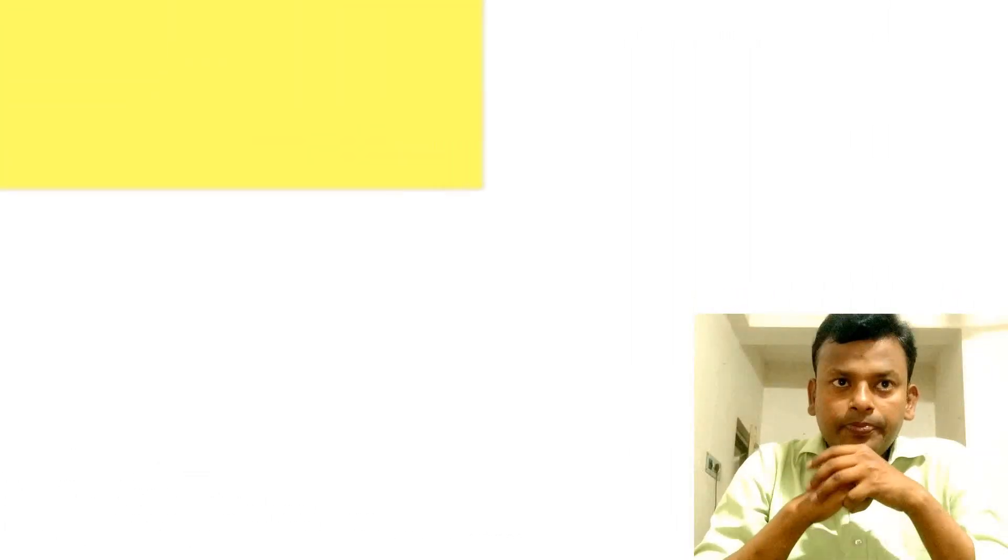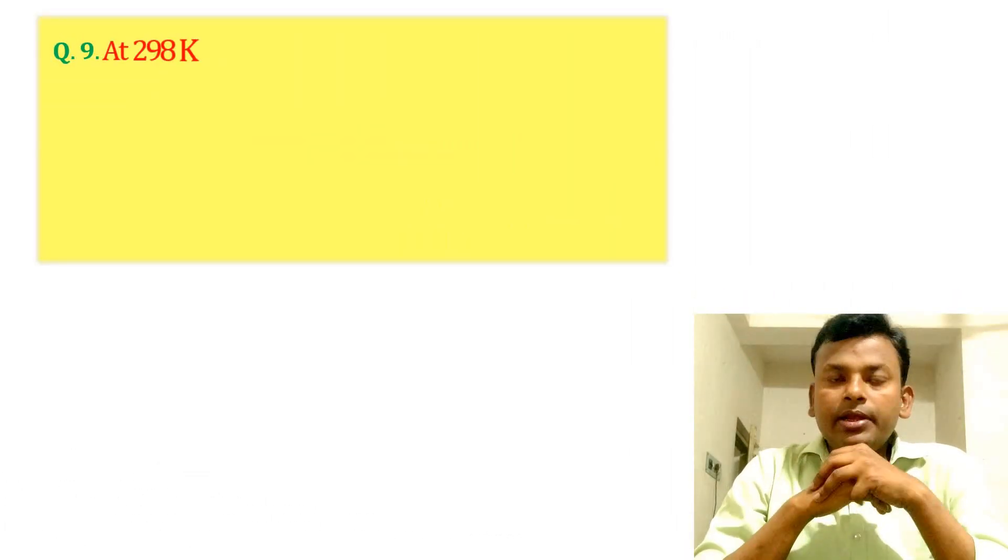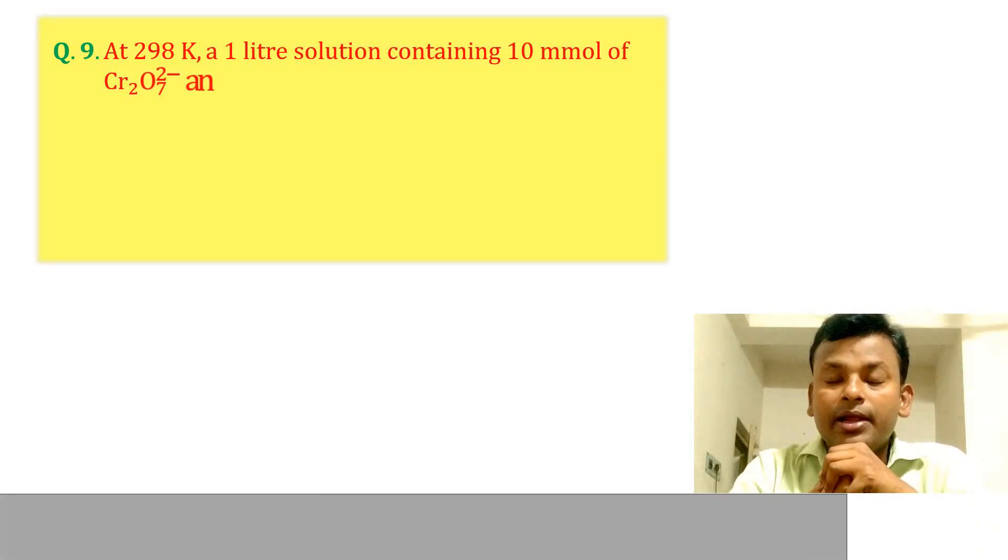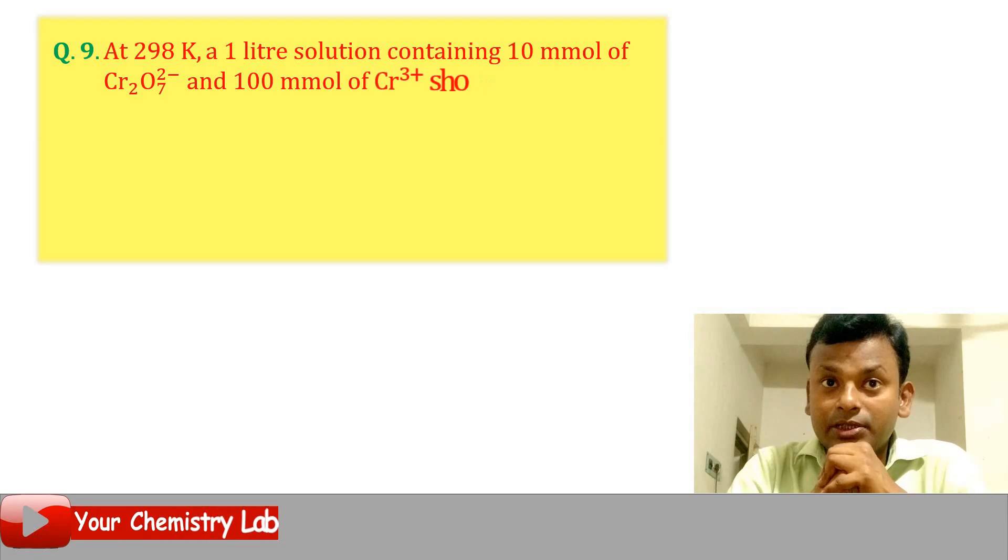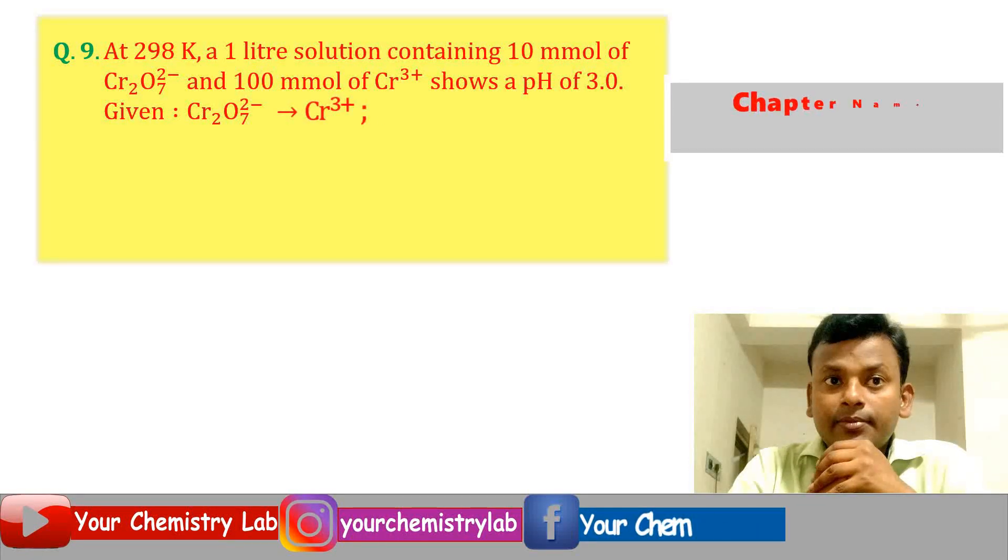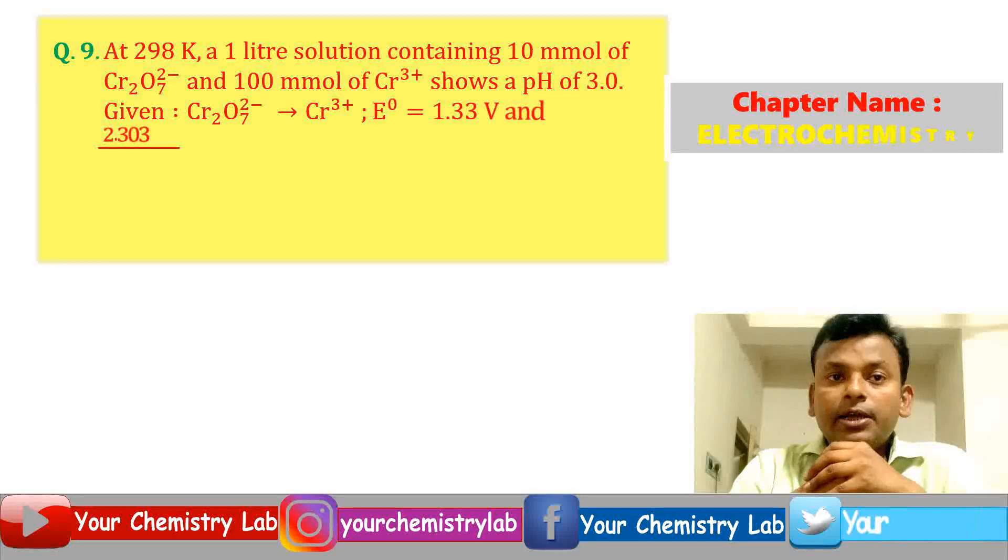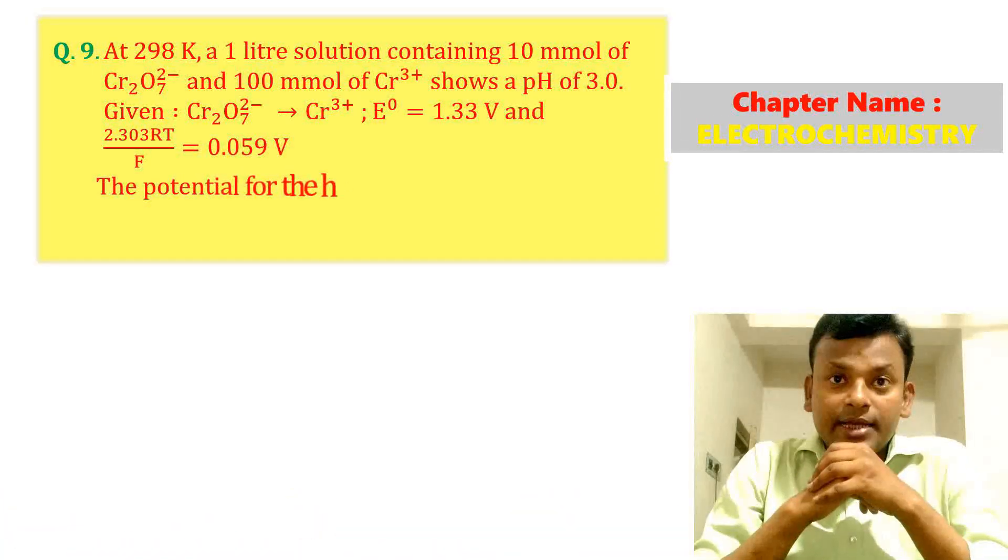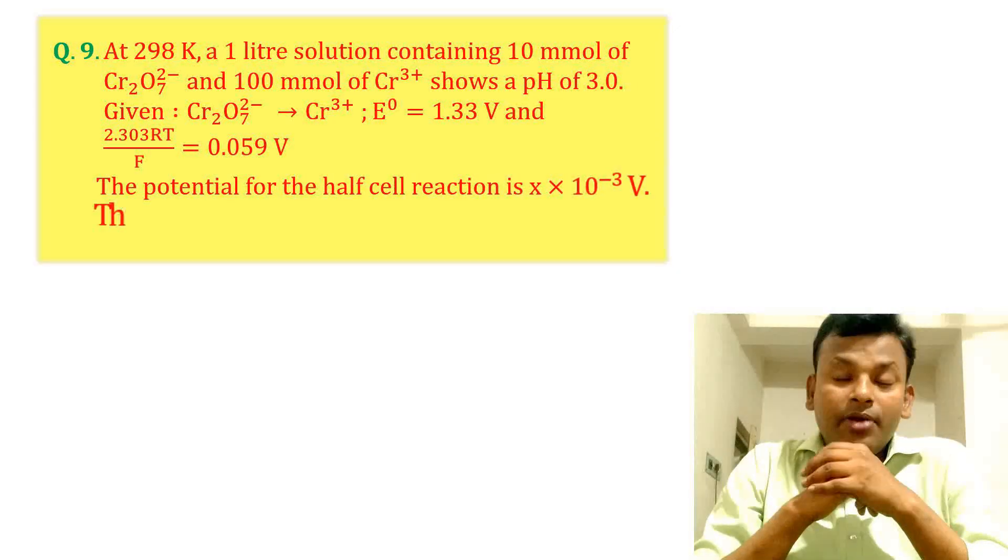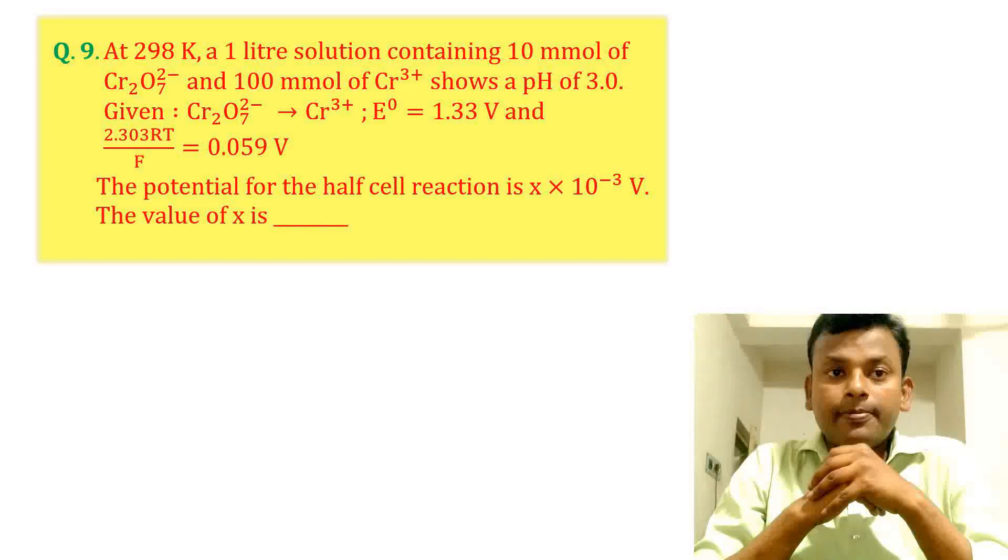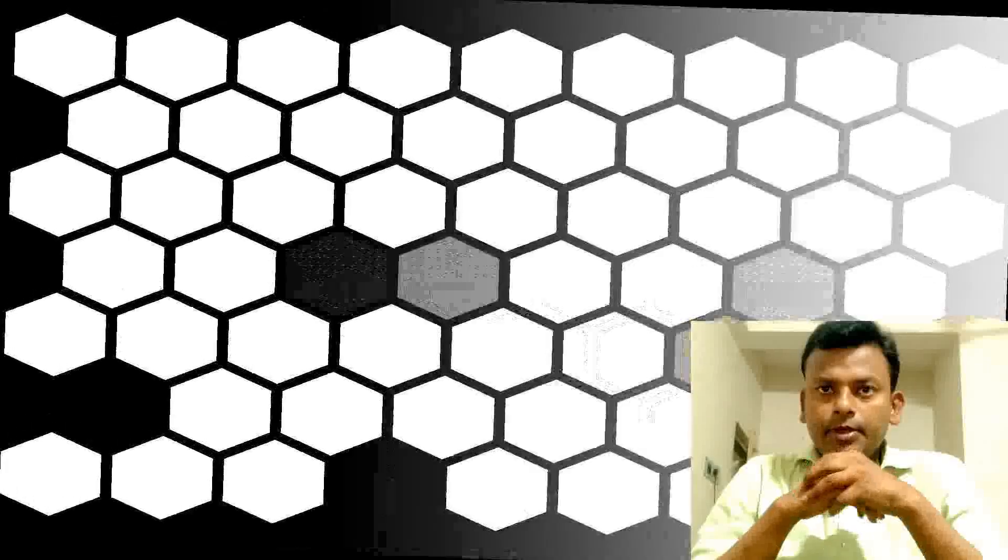Question 9: At 298 Kelvin, a 1 liter solution containing 10 millimolar of Cr2O7 2 minus and 100 millimolar of Cr3 plus at pH 3. Given this, the potential for the half cell reaction is x into 10 to the power minus 3 volt. The value of x is?